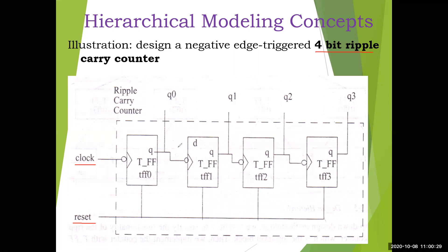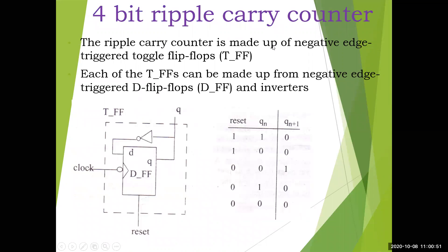This top-level block, designed by the architects, is divided into four sub-blocks: T flip-flop 0, T flip-flop 1, T flip-flop 2, and T flip-flop 3 — the second level. The ripple carry counter is made up of negative-edge-triggered toggle flip-flops, as shown in the figure. Each T flip-flop can in turn be built from a negative-edge-triggered D flip-flop and an inverter.